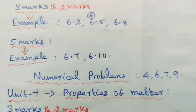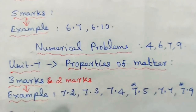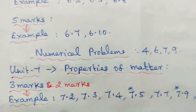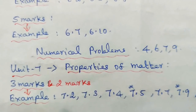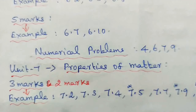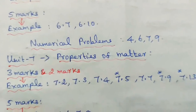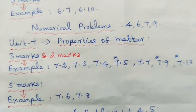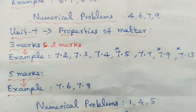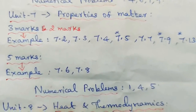Unit 7: Properties of Matter — 2 marks and 3 marks. Example problems: 7.2, 7.3, 7.4, 7.5, 7.7, 7.9, and 7.13. Then 5 marks example problems: 7.6 and 7.8. Numerical problems: 1, 4, and 5.